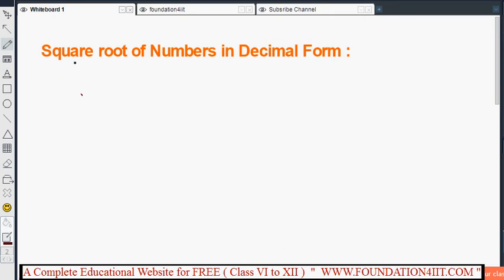Square root of numbers in decimal form. If a number is in decimal form, we will find out the square root using division method only. First of all, if any number is given, we have to make the decimal places even. Decimal places should be even. For example, take one question: 32.49.